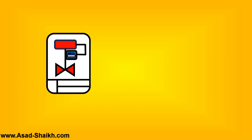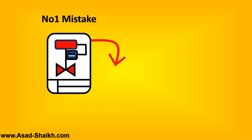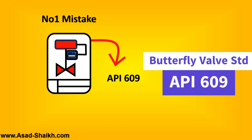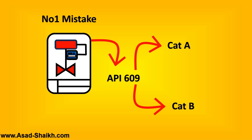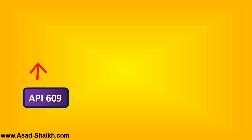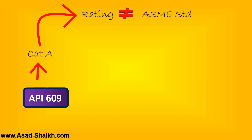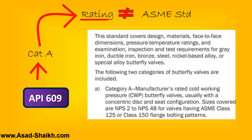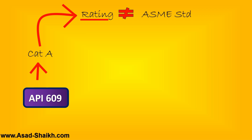One very important mistake that happens in control valve data sheets, especially for butterfly valves, concerns Category A and Category B. Engineers often assume that Category A is the best category and Category B is inferior. API 609 states that Category A butterfly valves have a rating that is not according to the ASME standard. Category A uses the manufacturer's rated cold working pressure and has only a concentric disc design, with ratings up to 125 to 150 flange class — very low pressure class applications.